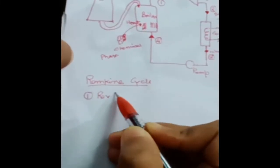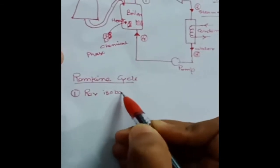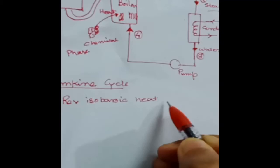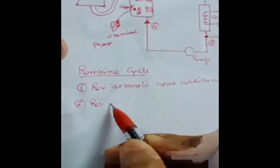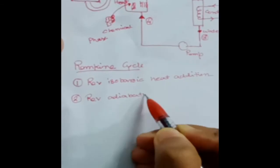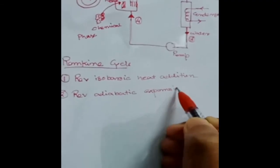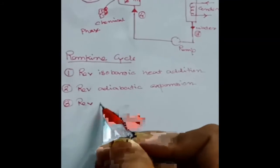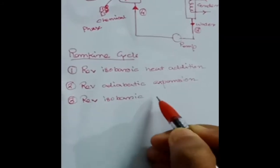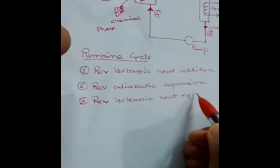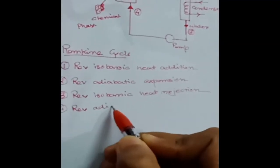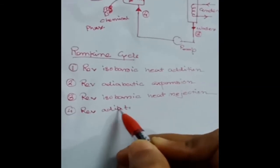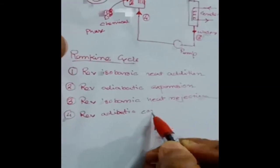The Rankine cycle consists of four steps. One is reversible isobaric heat addition. Two is reversible adiabatic expansion. Three is reversible isobaric heat rejection. And the fourth one is reversible adiabatic compression.